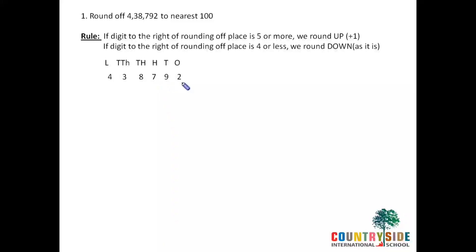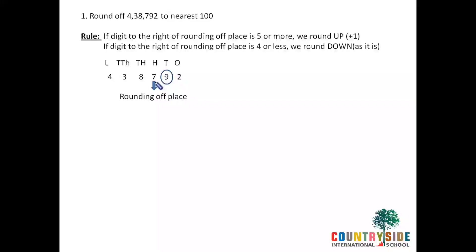Now, the rule says: if the digit to the right of the rounding off place is 5 or more, we round up. We have seen rounding up and rounding down in the previous examples. When you round up, it is only when the digit to the right of the rounding off place is 5 or more. So what is the rounding off place in our example? It is 7 — that is the rounding off place. Observe properly: the digit to the right of the rounding off place is in the 10s position, that is 9 in our example. You have to see this digit. Don't make a mistake by only looking at 7. So 9 is greater than 5, and it will be rounded up.